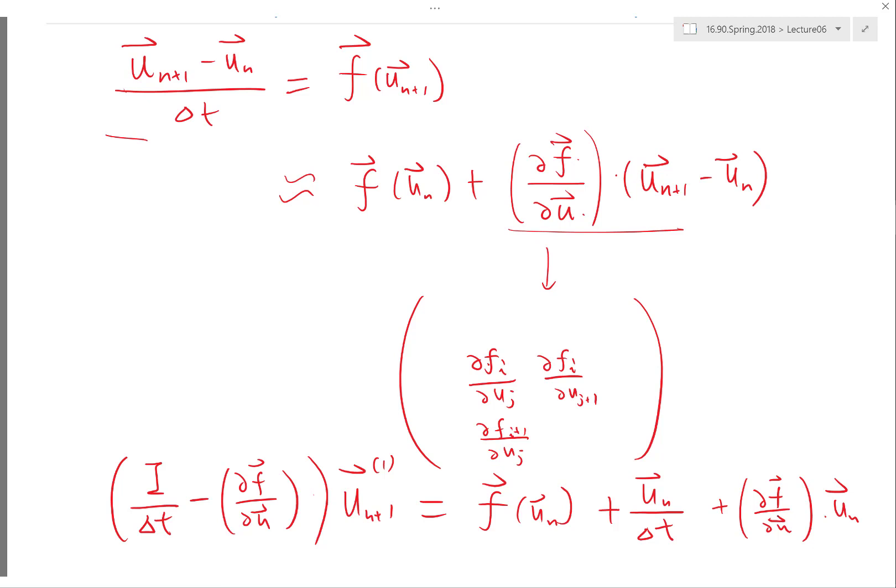And not just computing this, you have to solve multiple linear systems to actually perform even one time step. As opposed to using explicit, you don't need to solve any linear system to just get to the next time step.